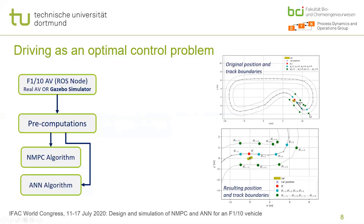You see a situation in the top image where the car is at the red position. You also see the points provided by the SLAM algorithm for the left and right boundaries, as well as the points on the center line of the track. In this work, we are always transforming all of these points so that the car is always at the center of the coordinate system and its orientation is always along the X axis.